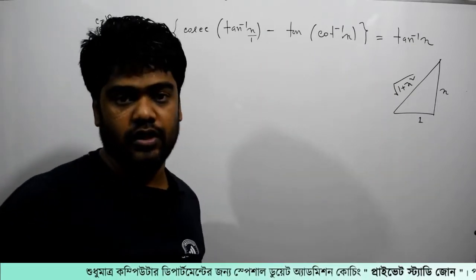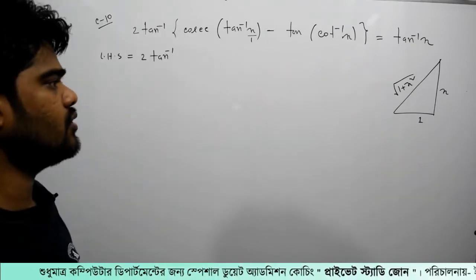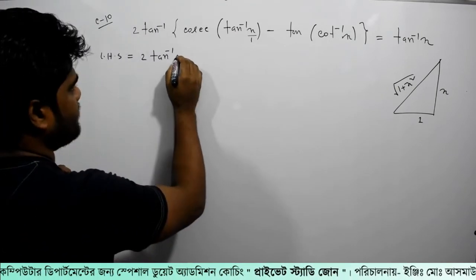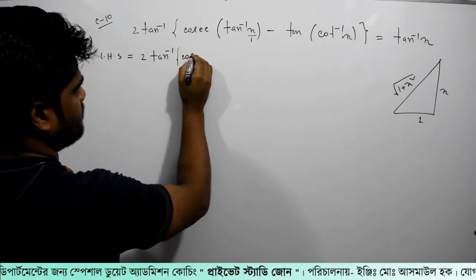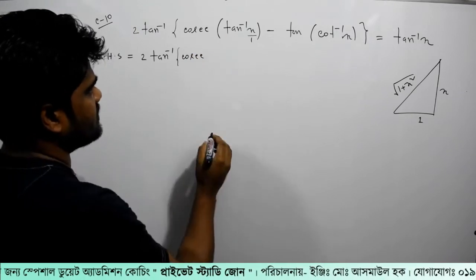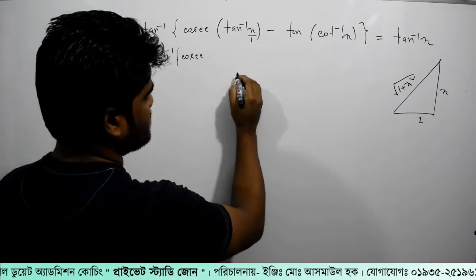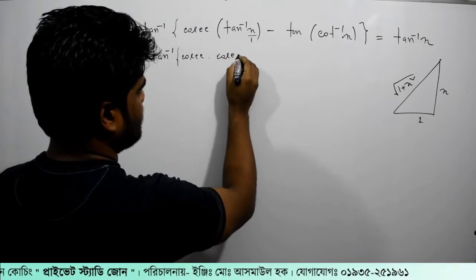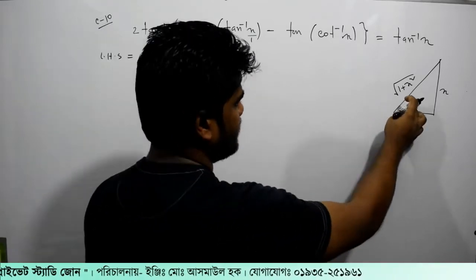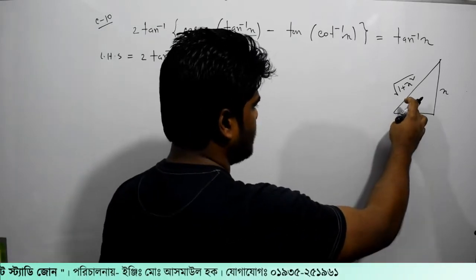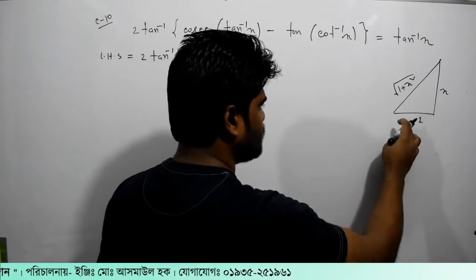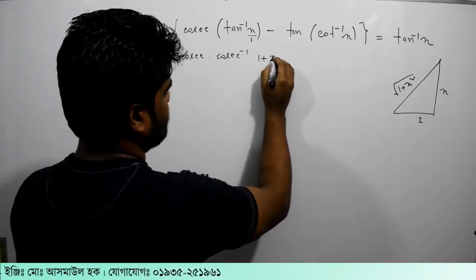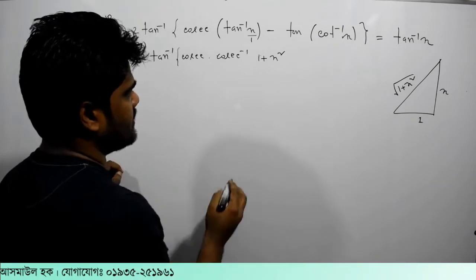So we know that the root is 1 plus x squared, so we have to write cosec inverse. We write cosec inverse, and cosec means 1 plus x square, root over.